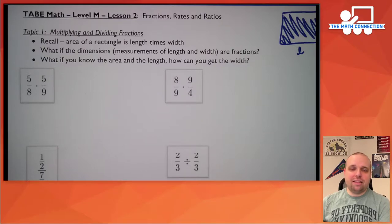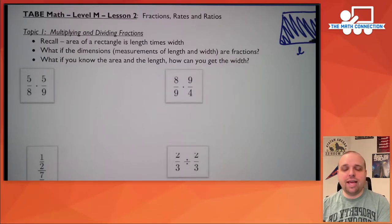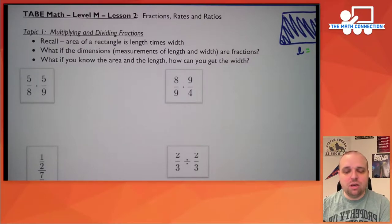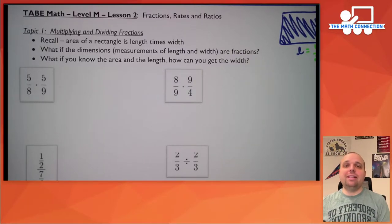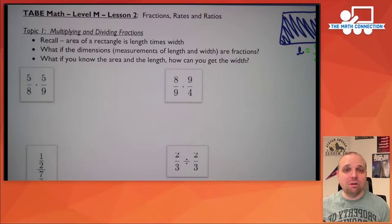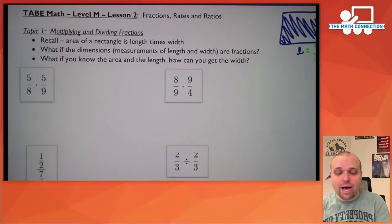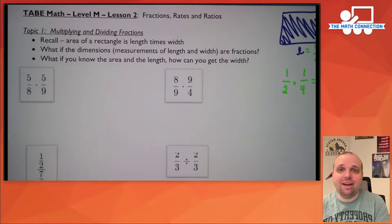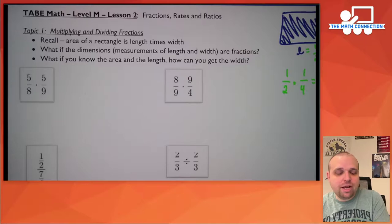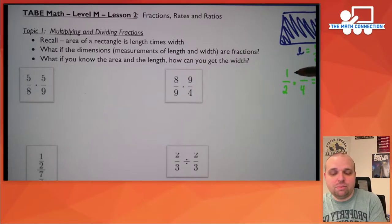But what if the dimensions are fractions? For example, what if the length of the rectangle is one half of a yard and the width is a quarter of a yard? You still multiply length times width, but now you have fractions. You need to multiply one half by one quarter to find the area.